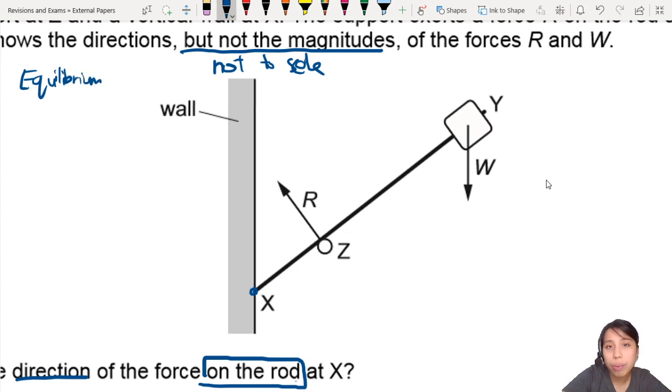So equilibrium has two parts to it. When you say the rod is in equilibrium, it means that the net force of the rod horizontally, vertically is zero. What does that mean? That means up, down, left, right should be zero.